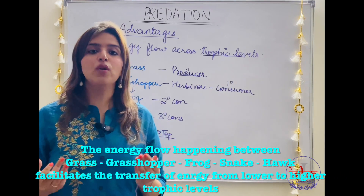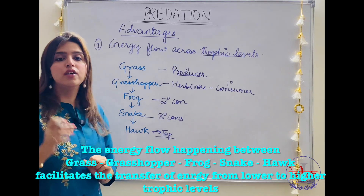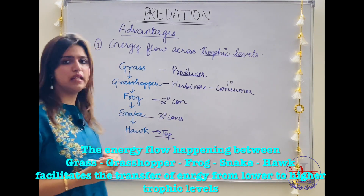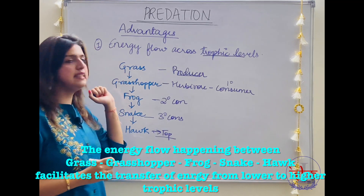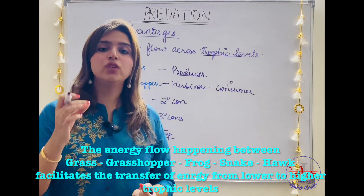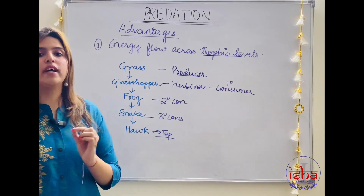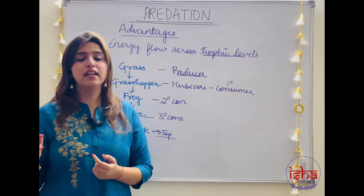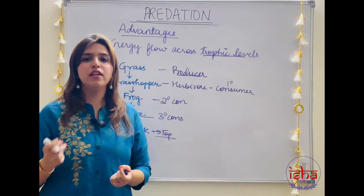Here an energy flow is happening: from grass, to grasshopper, to frog, to snake, to hawk. If this predation were not happening — not only the hawk eating the snake or the snake eating the frog, but even the grasshopper eating the grass (that herbivore is also a predator) — predation is happening at every level and energy is being transferred to a higher level. This is the role that predation plays in the transfer of energy.